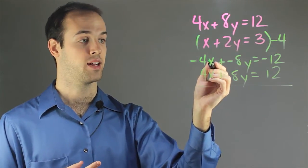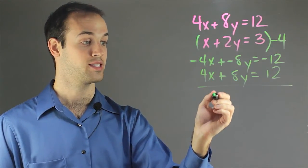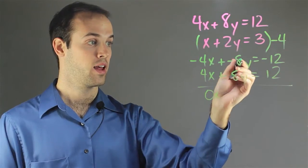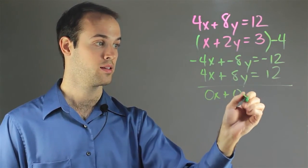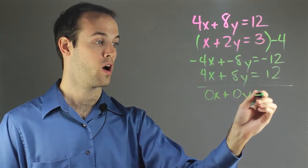But I can see that something's going to happen. I see that negative 4x plus 4x equals 0x, negative 8y plus 8y equals 0y, and negative 12 plus 12 equals 0.